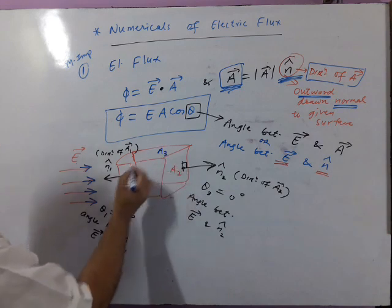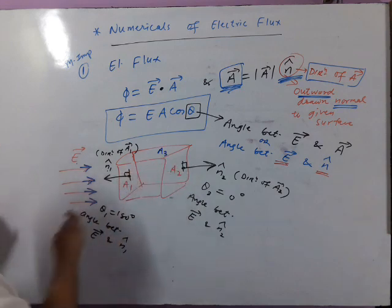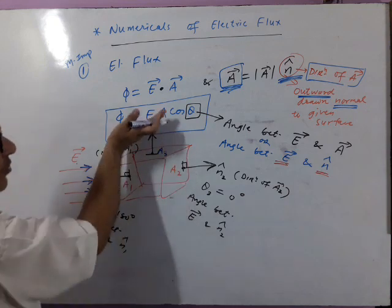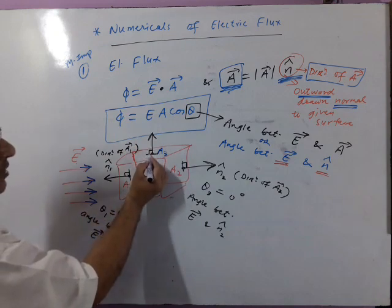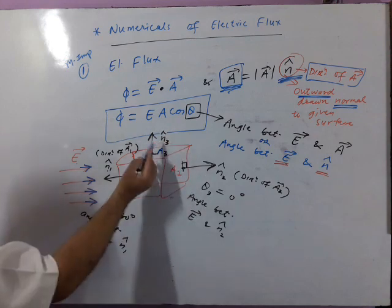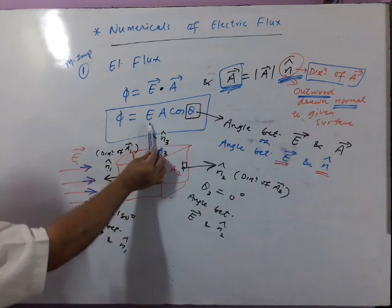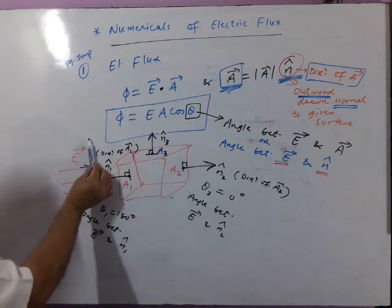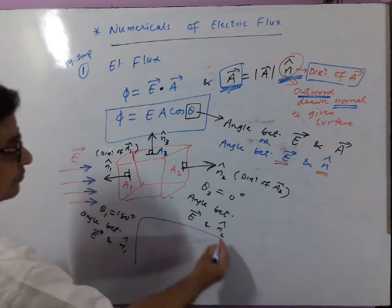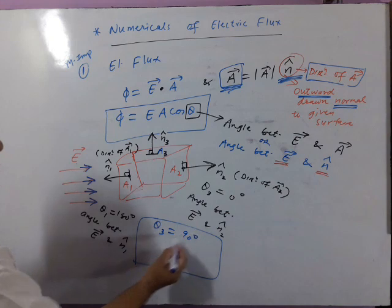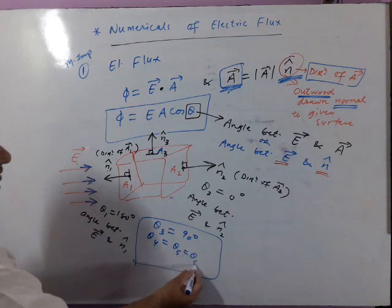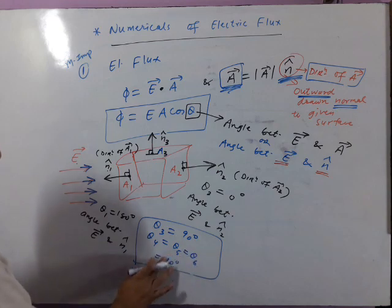Now consider area 3. Its outward drawn normal, n₃-cap, points upward — perpendicular to the electric field — so θ₃ is 90 degrees. Similarly, θ₄, θ₅, and θ₆ are all 90 degrees, because for each of those surfaces, the outward normal is perpendicular to the electric field direction.